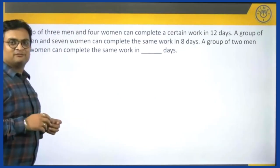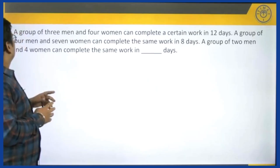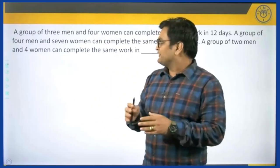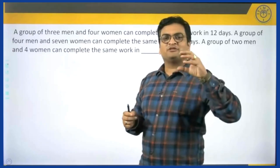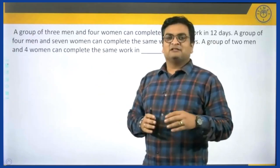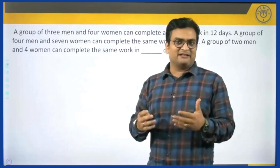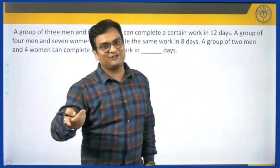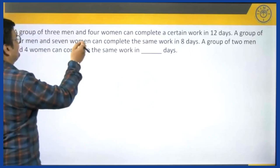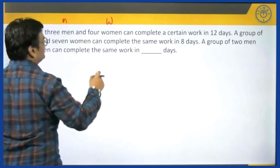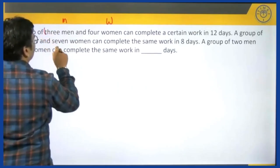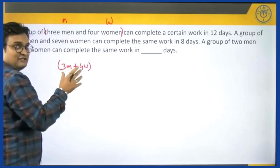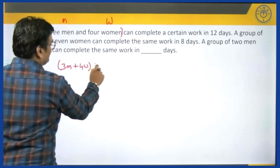Next question is from heterogeneous groups with different efficiencies. Read it and try it out once yourself. When you look at this question, note that we are talking about two different groups — a group of men and a group of women. We assume each man has the same efficiency and each woman has the same efficiency, but we cannot say men and women have the same efficiency. So let us assume each man's efficiency is M and each woman's efficiency is W. A group of 3 men and 4 women can complete a certain work in 12 days, so total work equals their combined efficiency times 12.